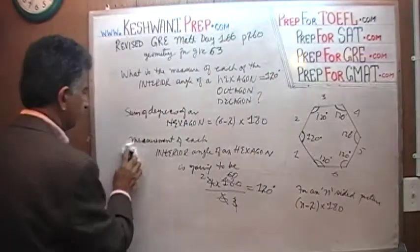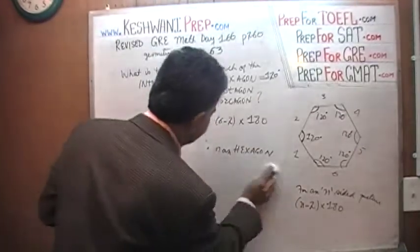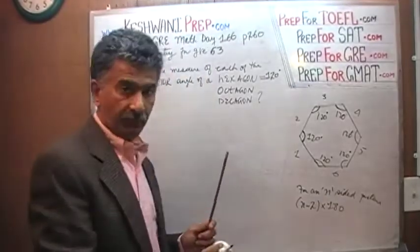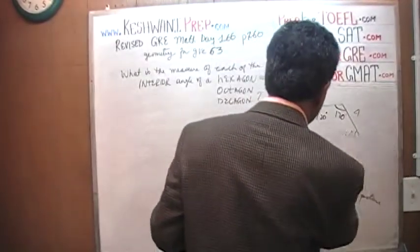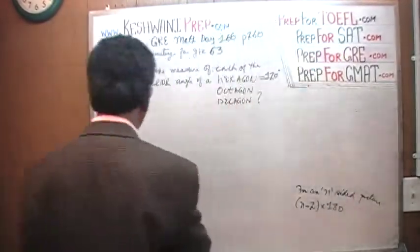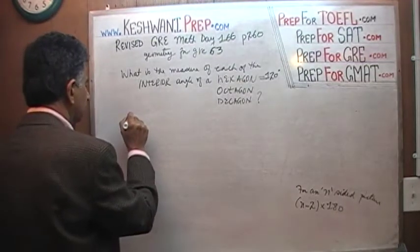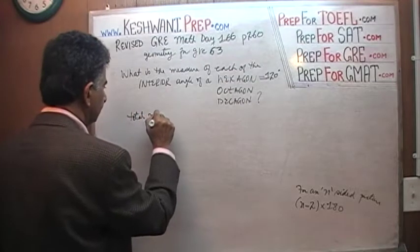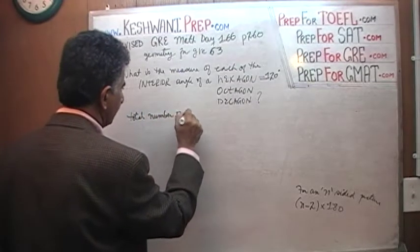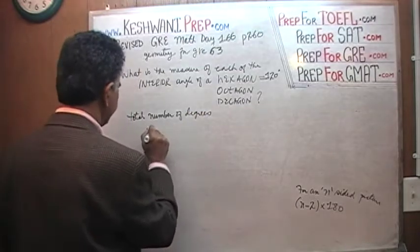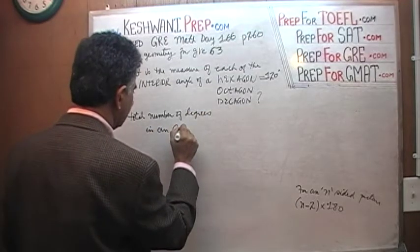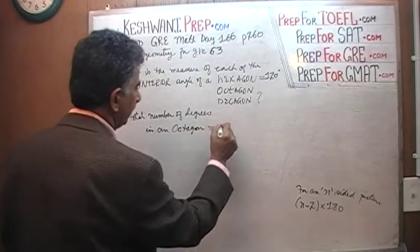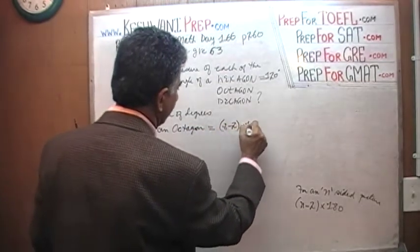Let's move on to the octagon. An octagon, as we know, has eight sides. The total number of degrees in an octagon is going to be (8 minus 2) times 180.